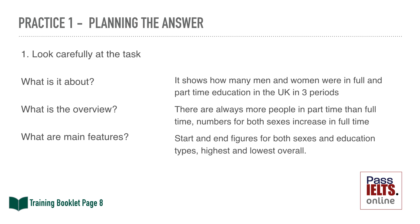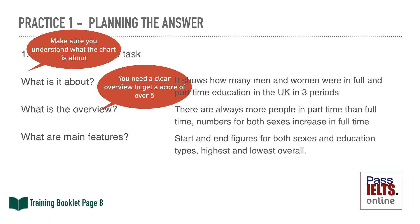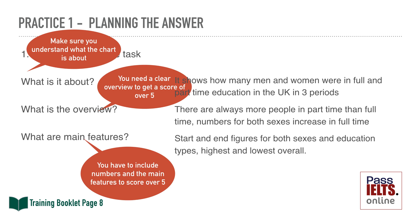Let's just go through those points again. First of all, you need to make sure you understand what the chart is about. Then you need a clear overview to get a score of over five in task achievement. And lastly, you have to include numbers and the main features to score over a five.